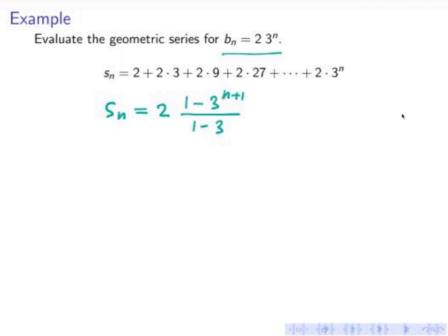Now we see in this case that 3 and 3 to the n are all bigger than 1. So the numerator and denominator are both negative. We can flip them over and then we have positive terms.